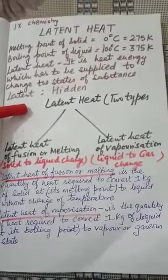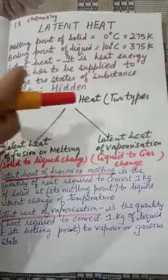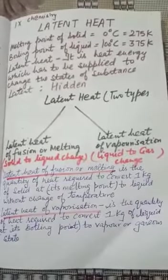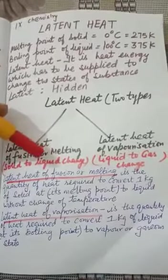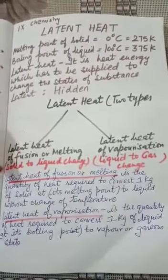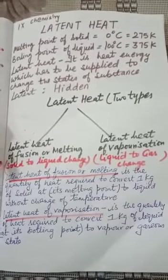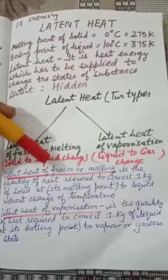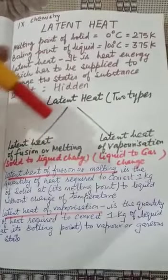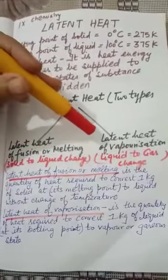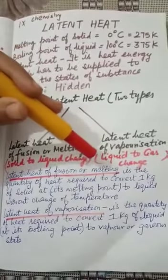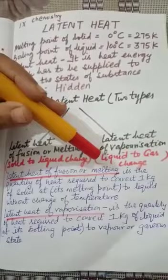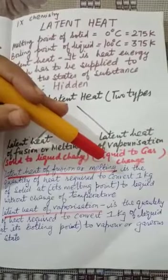Latent heat is of two types. The first is latent heat of fusion or melting, which is the change of solid to liquid state. The other is latent heat of vaporization, which is the change of liquid state to gaseous state.